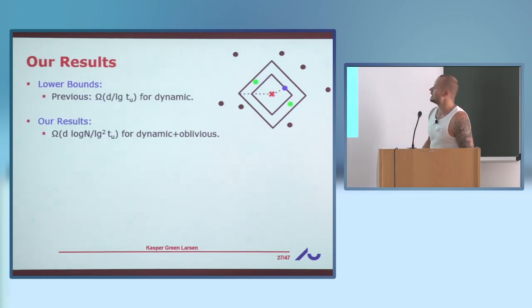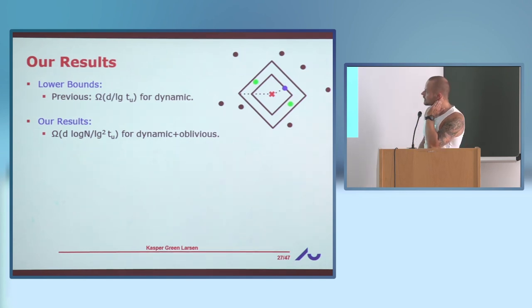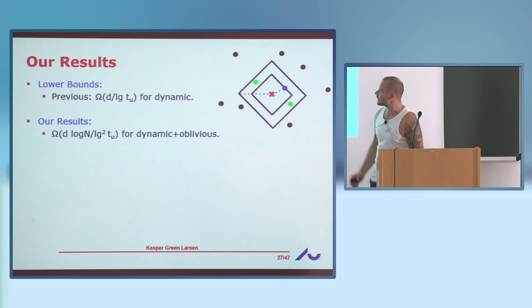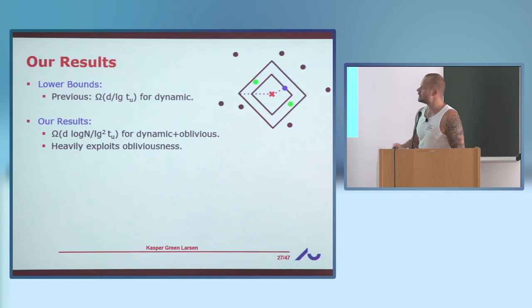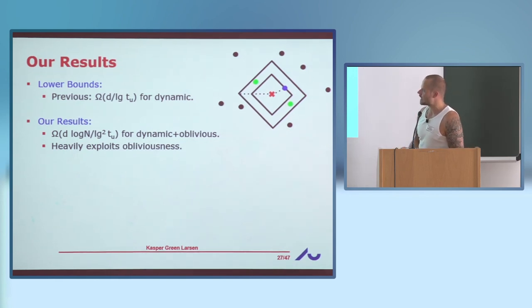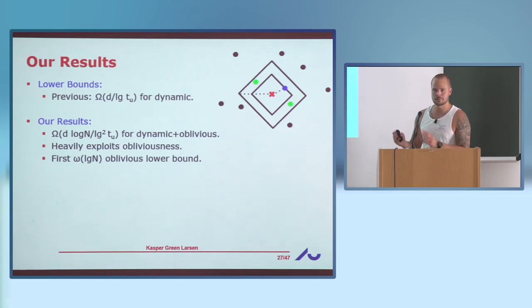What we do is try to boost this: we start with a problem that has a super-constant lower bound and try to boost it by a log N factor by applying obliviousness. The lower bound scales by a log N factor but divides by another log of the update time. This is the first super-logarithmic lower bound using obliviousness.